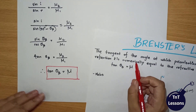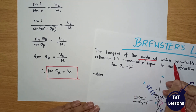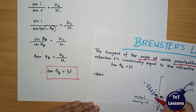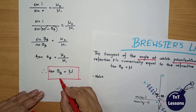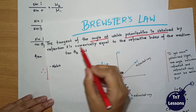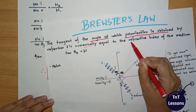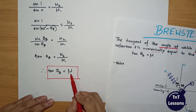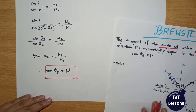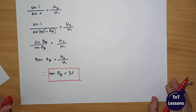The tangent of the angle at which polarization is obtained — that angle theta B — tan theta B is numerically equal to the refractive index of the medium, mu. That's what we call Brewster's Law.